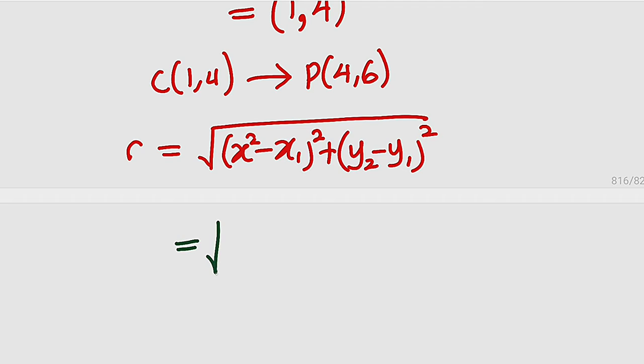This is the same thing as the square root of, if I consider 4 here as x₂, we say that x₂ which is 4, minus x₁ which is 1, all squared, then plus y₂ which is 6, minus 4, all squared. Remember that this is radius.